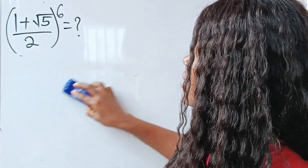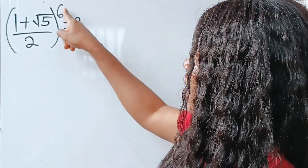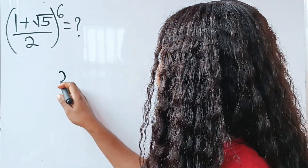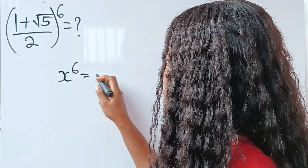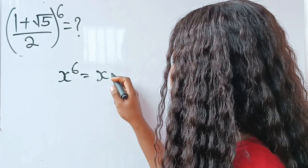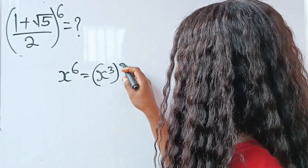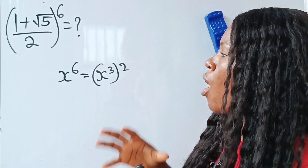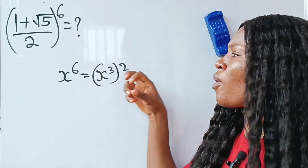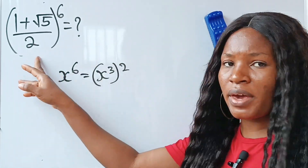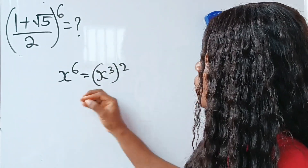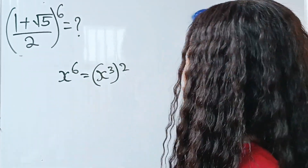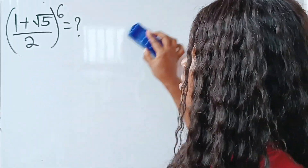That means that if I have a power of 6, x to the power of 6 is the same thing as x to the power of 3 raised to the power of 2. All I will do is get x to the power of 3 from here, then square it to get my result. As easy as that. So let's go straight and solve this.